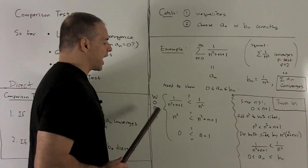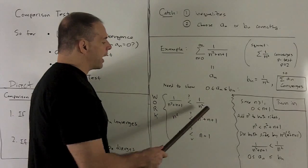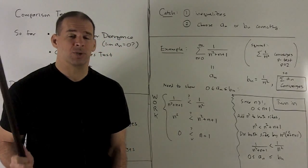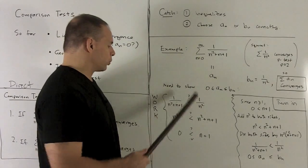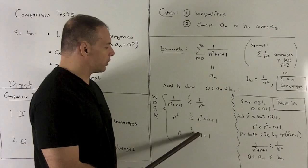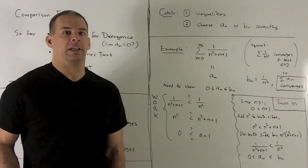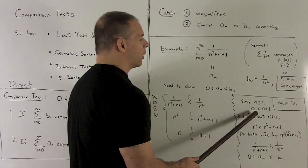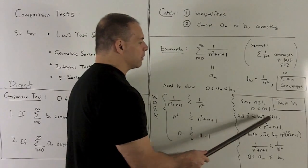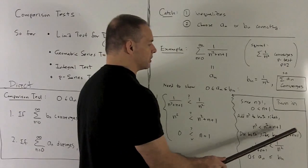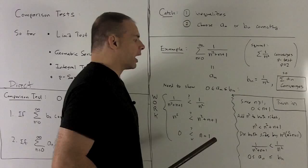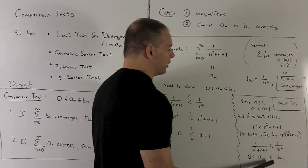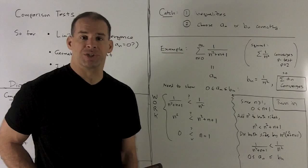Clearing the denominators has the effect of just switching things to the other side. Then I can cancel the n² terms, leaving me with 0 < n+1. Since we're starting the series at n=0, I'm taking n ≥ 0 and adding one — that's always bigger than zero. When writing it up in forward order: since n ≥ 0, we have 0 < n+1. Adding n² to both sides gives n² < n²+n+1. Dividing both sides by n²(n²+n+1) gives the inequality 0 ≤ a_n ≤ b_n. Then by the p-test, the series for b_n converges, so by the direct comparison test the series for a_n converges.